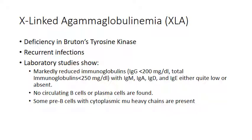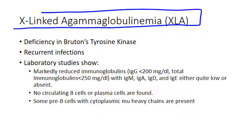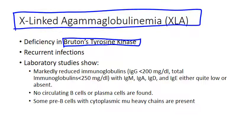Now let's get into some of the more important B-cell immunodeficiencies. By far the most important to know is X-linked agammaglobulinemia, or XLA — sometimes called BTK deficiency or Bruton's tyrosine kinase agammaglobulinemia. In 1952, Bruton described the first boy with this X-linked syndrome.